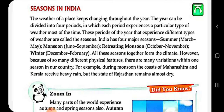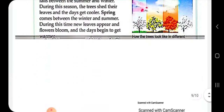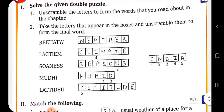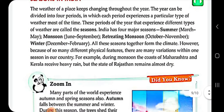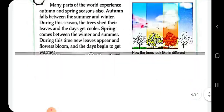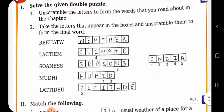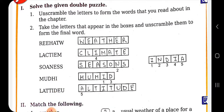The four seasons are: summer, monsoon, retreating monsoon, and winter. All these seasons together form the climate. So this chapter covers weather, weather forecast, climate, seasons, and the factors affecting weather and climate.